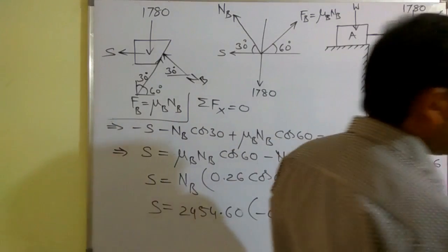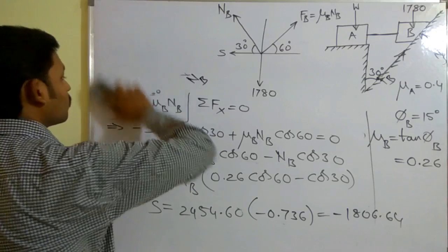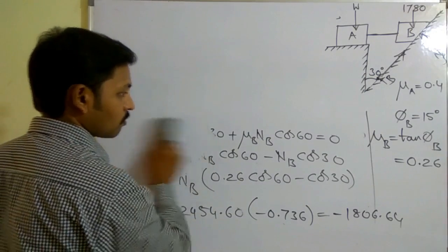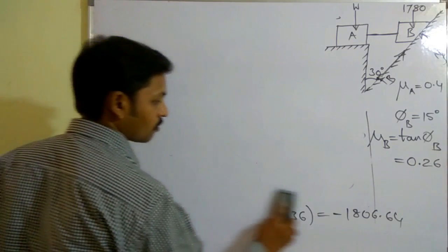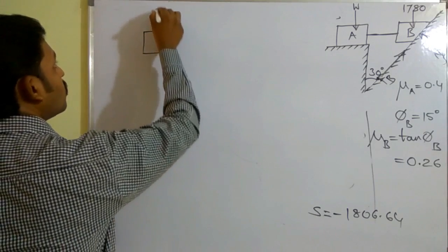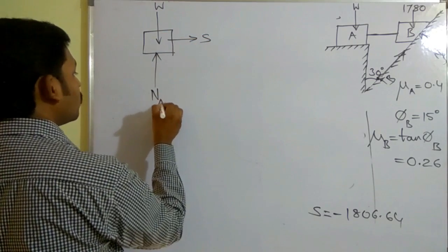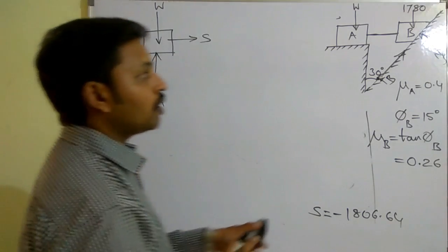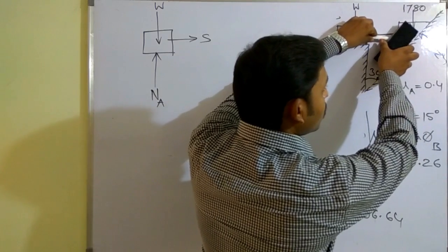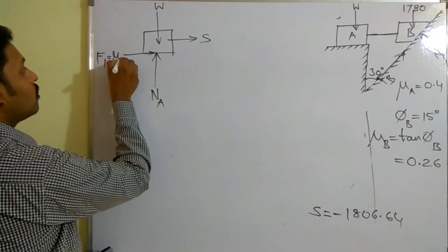Now let us consider the free body diagram for block A. The tension S acts along the bar. Block A is not able to move in one direction, so the normal reaction N_a acts perpendicular to the horizontal surface. Since block B moves downward, block A tends to move in the left-hand direction. In the opposite direction, the frictional force F_a = μ_a × N_a acts to resist that motion.